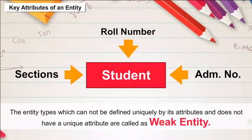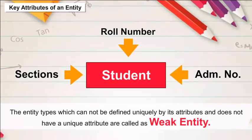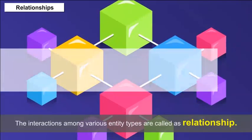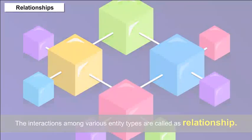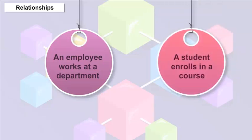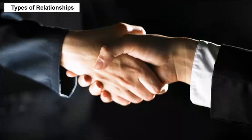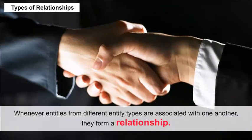The entity types which cannot be defined uniquely by their attributes and do not have a unique attribute are called weak entities. Relationships — the interactions among various entity types are called relationships. For example, an employee works at a department; a student enrolls in a course. Here, 'works at' and 'enrolls' are called relationships.